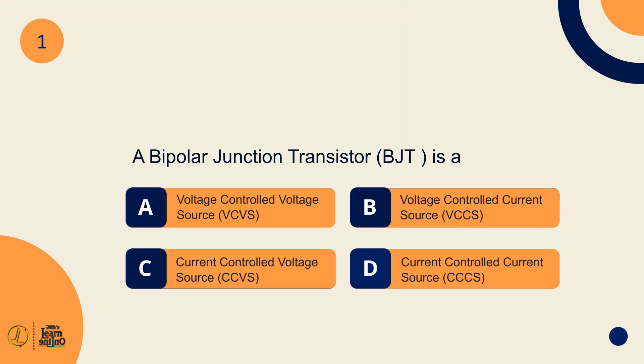A Bipolar Junction Transistor BJT is a current-controlled current source.